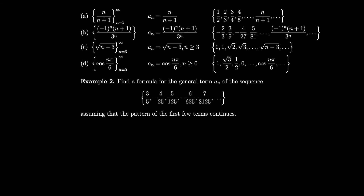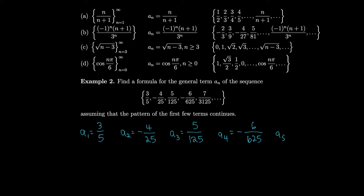Let's find a formula for the general term an of a given sequence, assuming the pattern of the first few terms continues. We look at a1, a2, a3, a4, and a5 and write them out explicitly because we need to figure out a pattern relating the numerator, denominator, and term number.